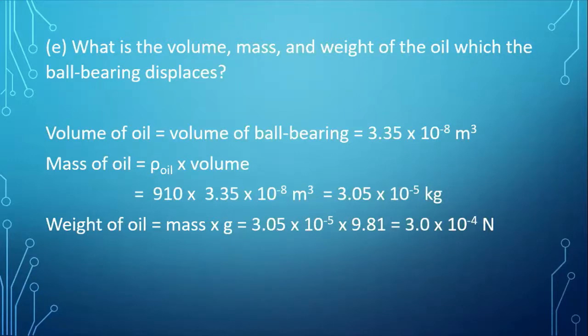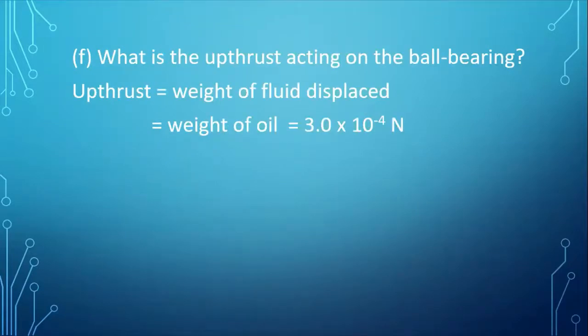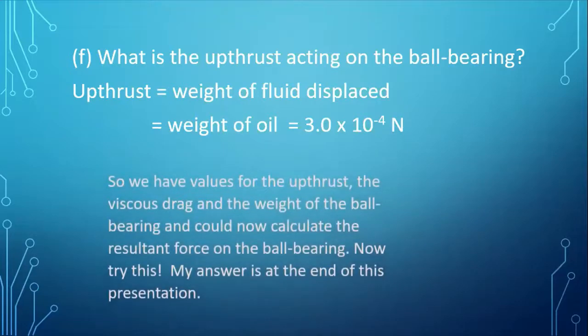Oh, isn't that the weight of the fluid displaced? It certainly is. So what is the upthrust acting on the ball bearing? The upthrust is the weight of the fluid displaced, which is the weight of the oil. So that's why I've gone through that calculation. So now we've got values for the upthrust, the viscous drag, and you can find the weight of the ball bearing. And so you could now calculate the resultant force on the ball bearing. Try this.